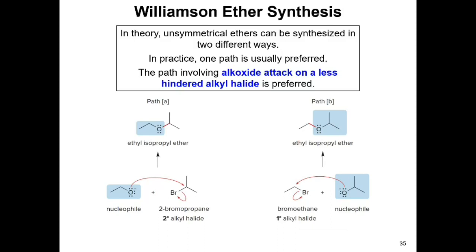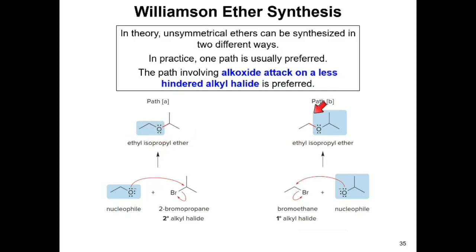There are two different ways to synthesize unsymmetrical ethers via Williamson ether synthesis, and one is preferred over the other. In path A, a secondary alkyl halide is used where ethoxide ion attacks the secondary carbon atom, forming ethyl isopropyl ether. In path B, a primary alkyl halide is used where isopropoxide ion attacks the primary carbon atom, giving the same ether. Since primary alkyl halides react much faster than secondary or tertiary, path B is preferred.